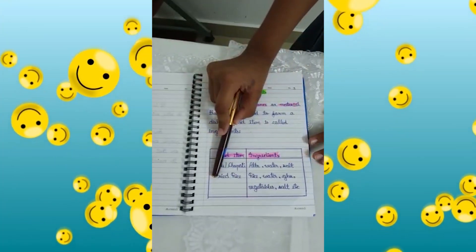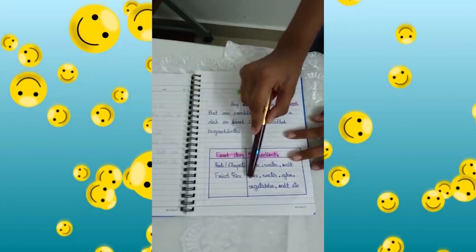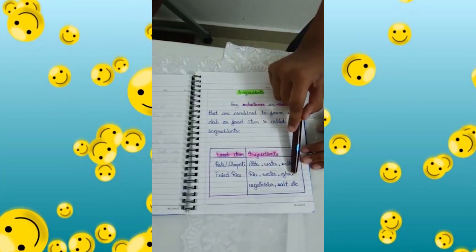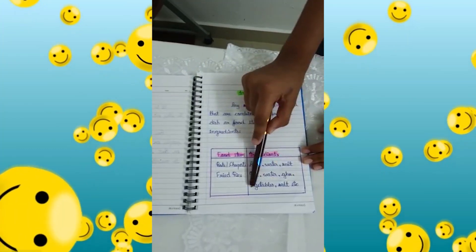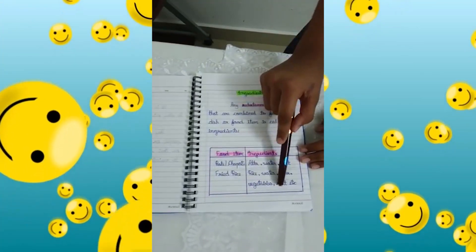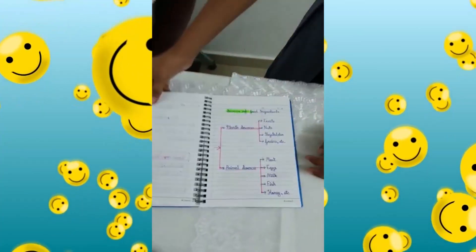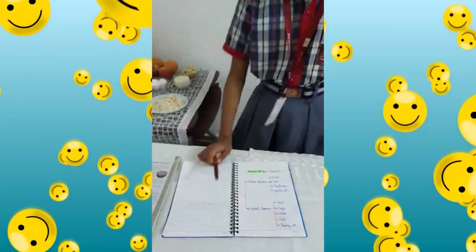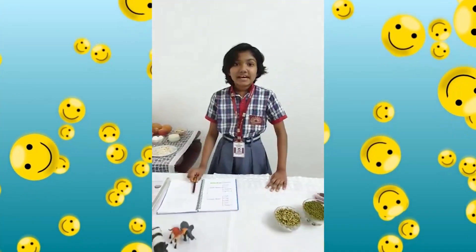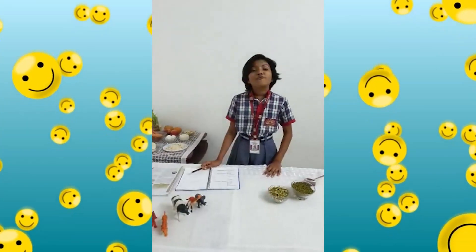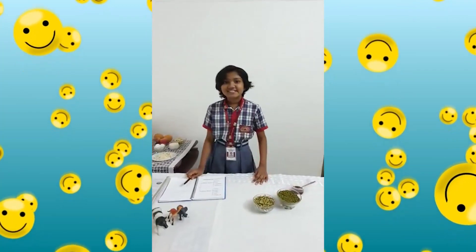Similarly, to make fried rice, I need rice, water, ghee, vegetables, salt, etc. Let's move on to the next topic, which is sources of food ingredients.